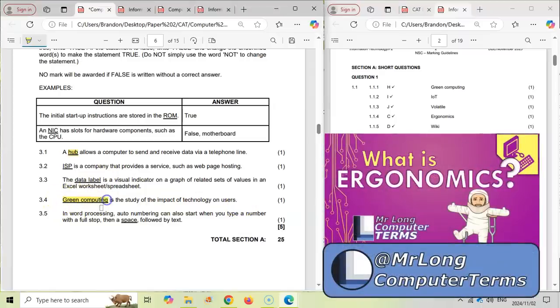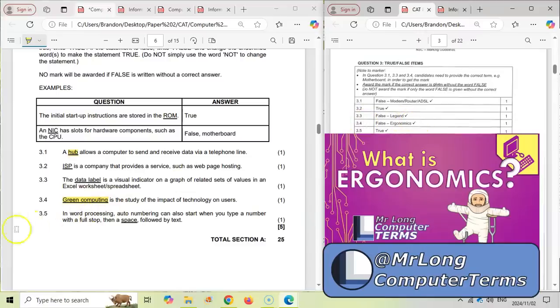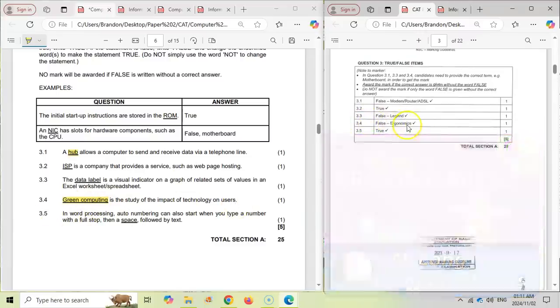So for example, green computing is the study of the impact of technology and users. That's not it. That's ergonomics. So you will change that word to ergonomics. So you'll say false, ergonomics. 3.4 false is ergonomics. Ergonomics is the study of the impact of technology and users. So you just say false. And what is the word that is going to replace the underlined word? And that will be your true false question.